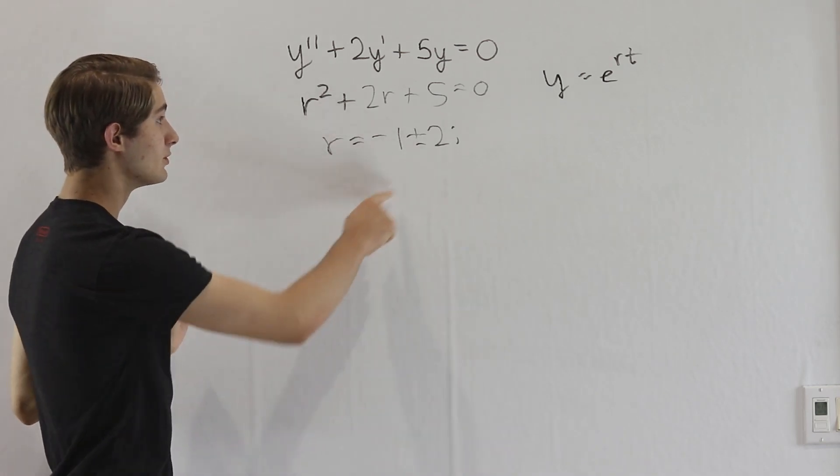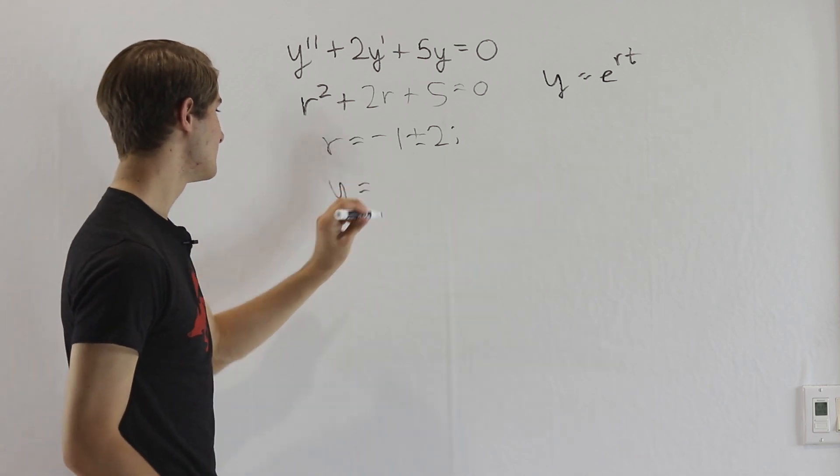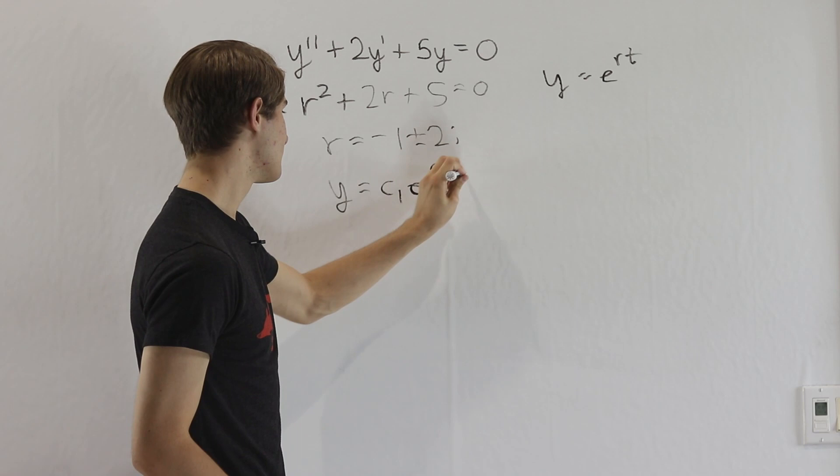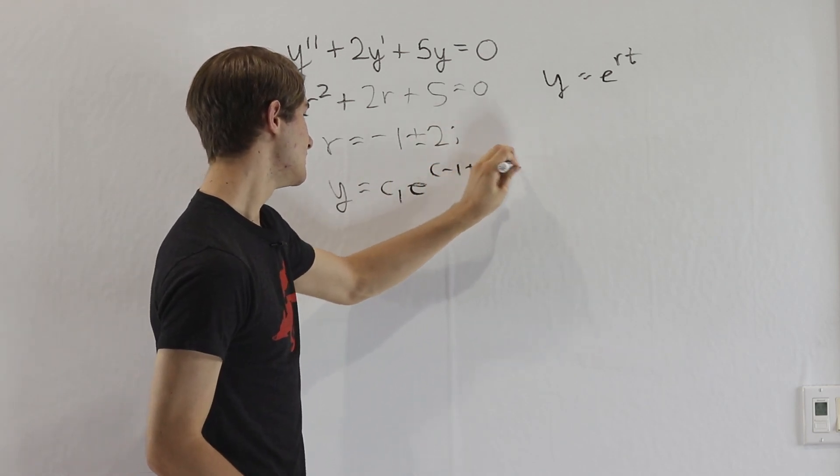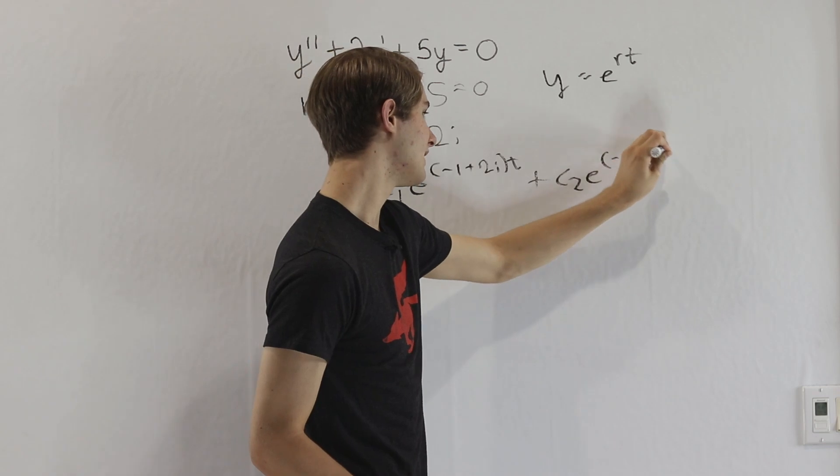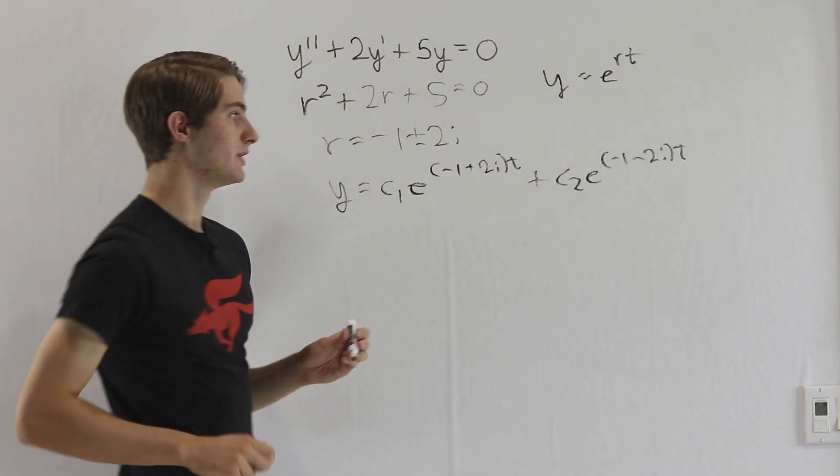Now if we're following the form of the solution we guessed here, y equals e to the rt, you might be tempted to say the solution will be y equals c1 times e to the negative 1 plus 2i t, and then plus c2 times e to the negative 1 minus 2i t. We've just plugged in our two values of r to this equation right here.